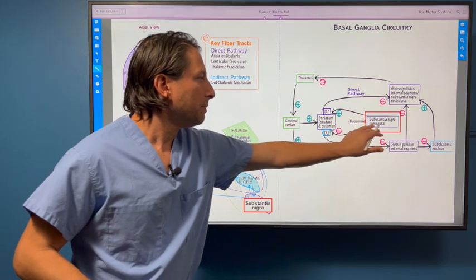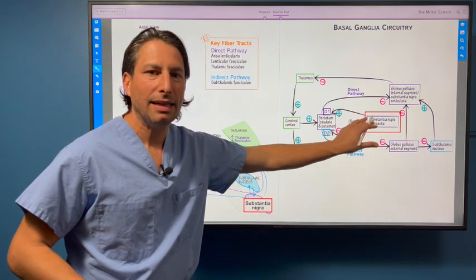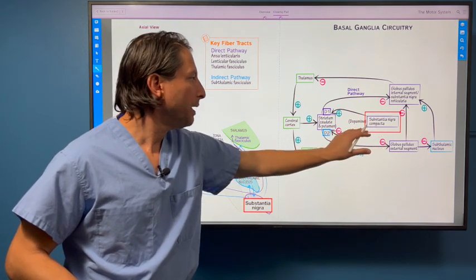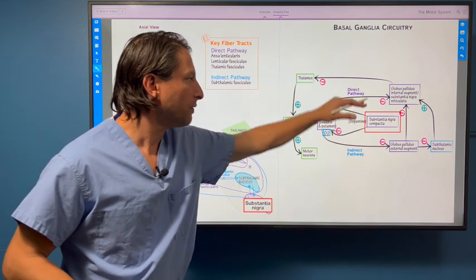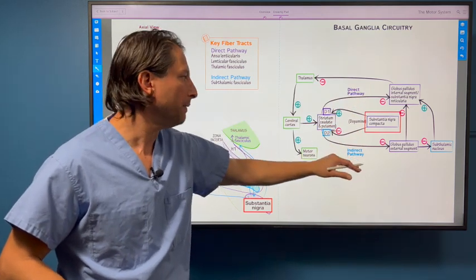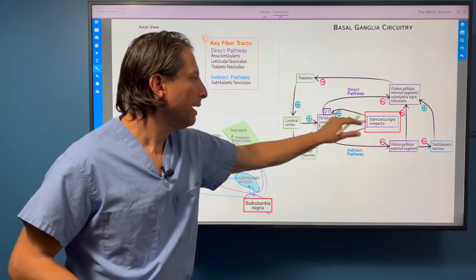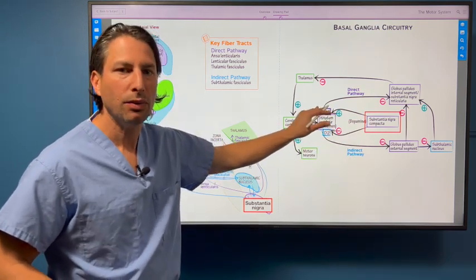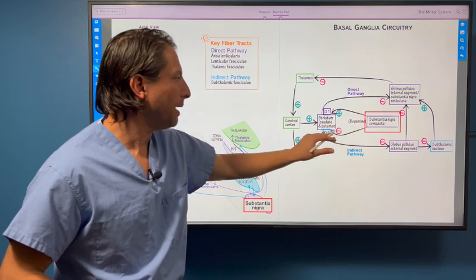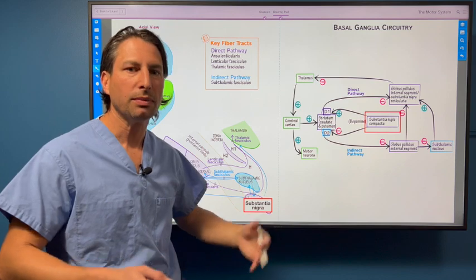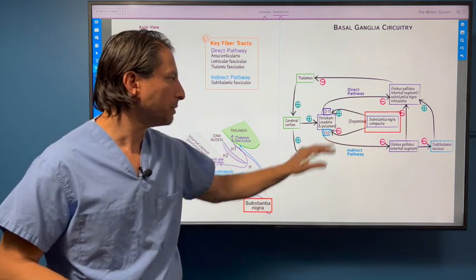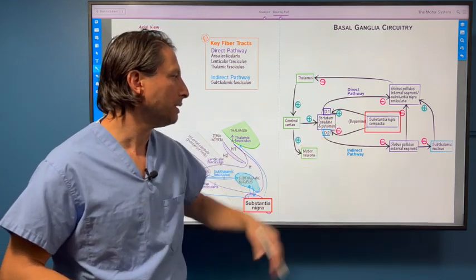So substantia nigra pars compacta has these dopaminergic cells. How they act on the striatum is different for the direct pathway and the indirect pathway. For the direct pathway, it's excitatory on D1 receptors. And for the indirect pathway, it's inhibitory on D2 receptors. There are multiple different dopaminergic receptors. We're just simplifying it using D1 and D2 here.